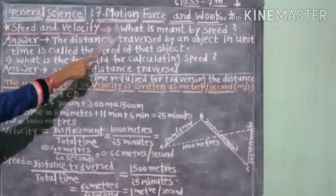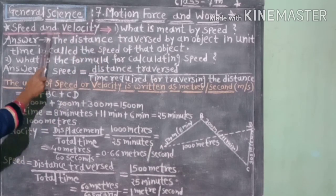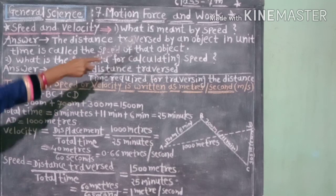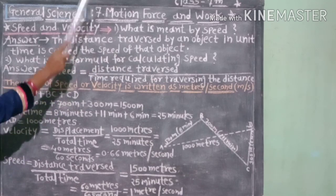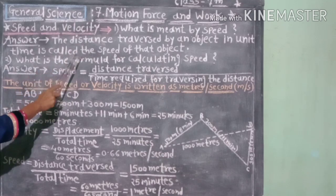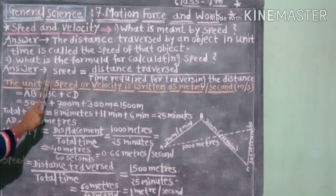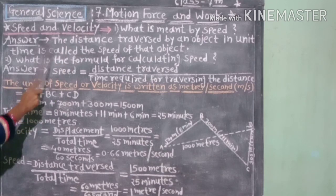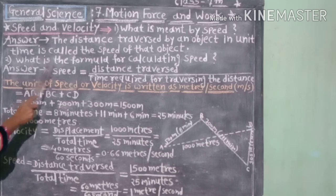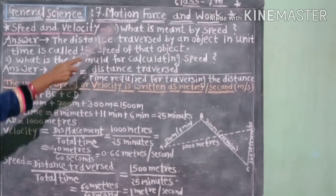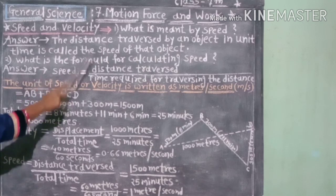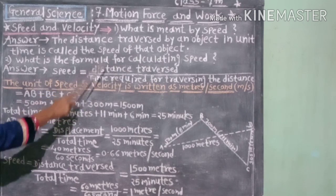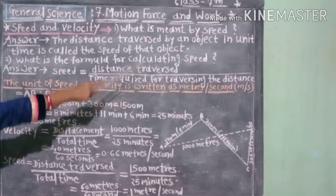Your first question: What is meant by speed? The distance traversed by an object in unit time is called the speed of that object. The formula for calculating speed: Speed is equal to distance traversed upon time required for traversing the distance.